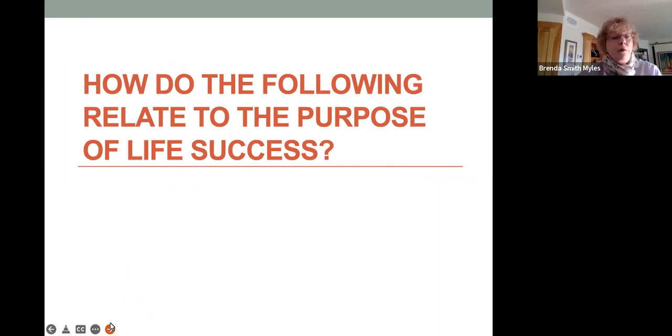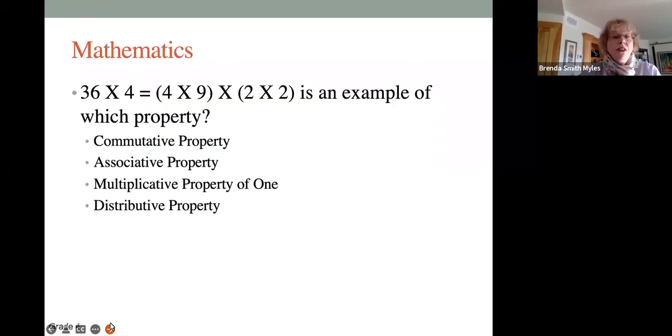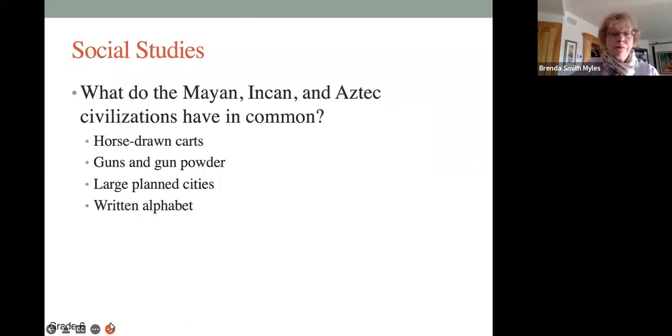Now, a lot of what we teach when we have a total academic focus quite often doesn't translate into life success. I'd like to share with you three questions from state exams, and to ask you how these relate to living a high quality of life. 36 times 4 equals 4 times 9 times 2 times 2 is an example of which property. Now, I would bet that most of you, unless you're a math teacher, don't know the answer to this question. But not knowing the answer to this question, has this kept you from having a bank account, writing a check, buying something that you want or need? Probably not.